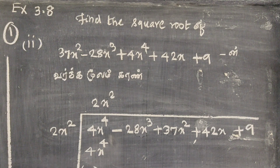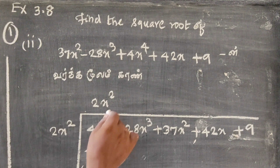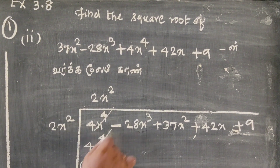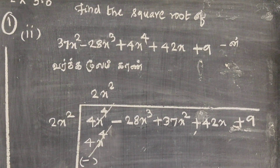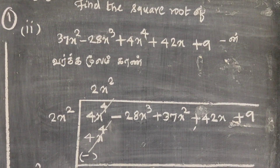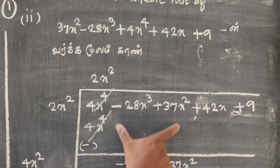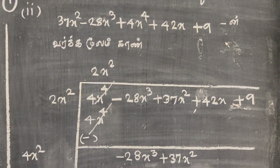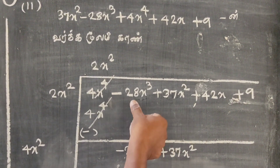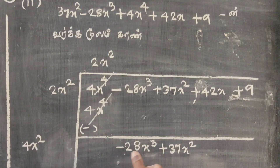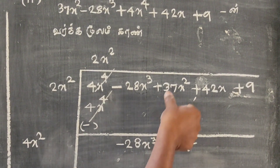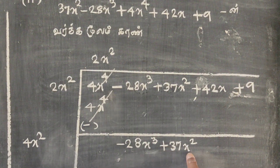This is minus. This will be cancelled — cancel at the same time. We are left with minus 28x³ plus 37x².